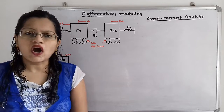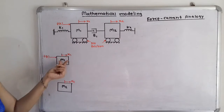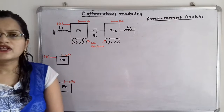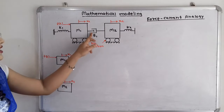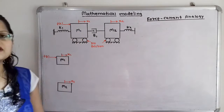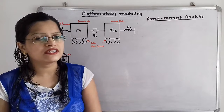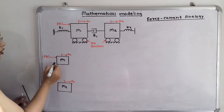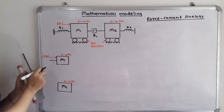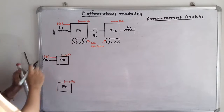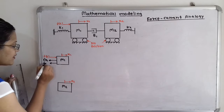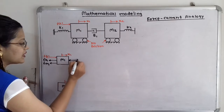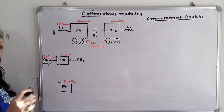Now we will first draw the free body diagram, starting with mass M1. Which elements are responsible for the reaction forces, given that the applied force is F(t)? For mass M1, the elements are: spring with stiffness K1, damper with viscous friction coefficient B1, and inertia due to mass M1. We draw these reaction forces in the opposite direction of the applied force F(t). So the reaction force due to spring is Fk1, reaction force due to inertia is Fm1, and reaction force due to the damper is Fb1.